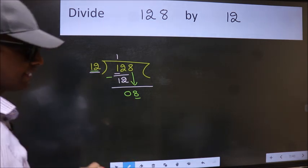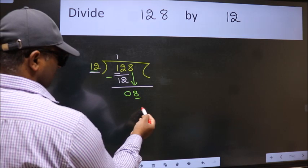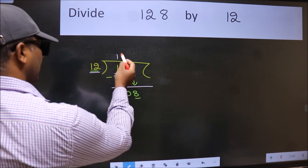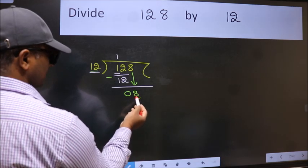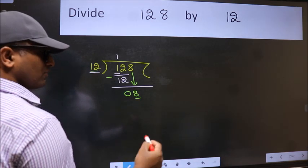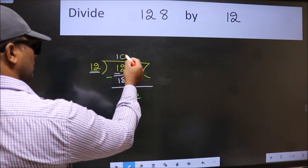what we should think of doing is which number should we take here. If I take 1, we will get 12, but 12 is larger than 8. So what we do is we take 0 here.